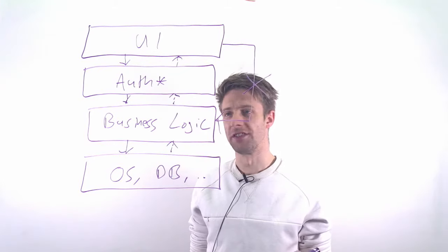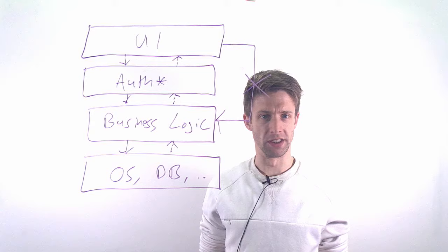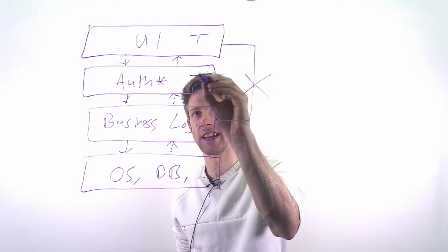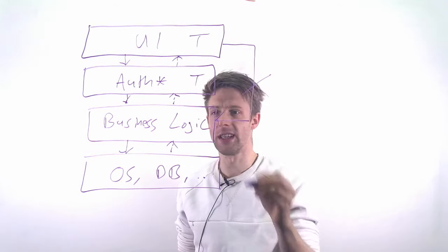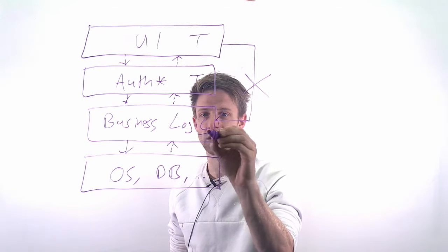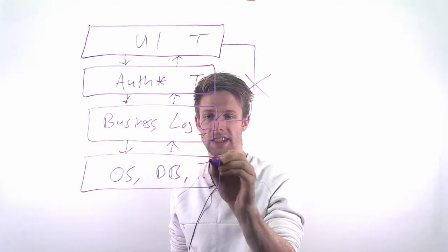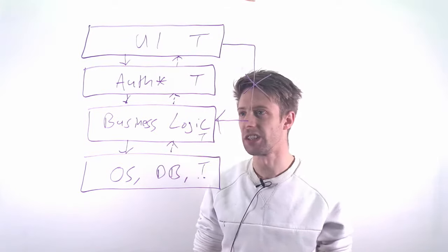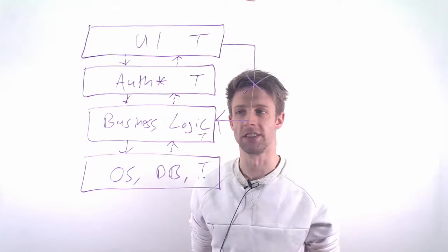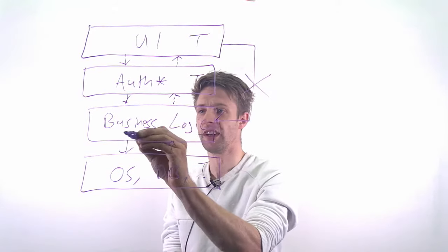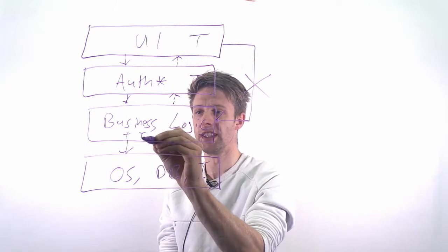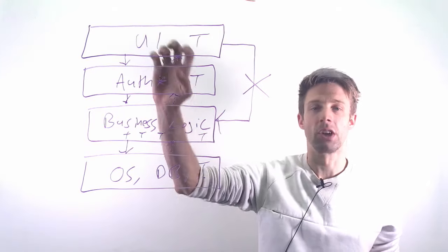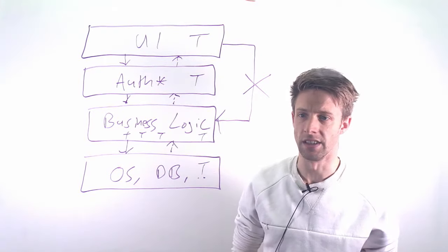This is a common way to structure teams — you have the UI team, the authentication or security team, the business logic team, and the database team. You might have multiple of those, and depending on how large your system is, a number of teams doing work here. It's a very common way of structuring your organization.